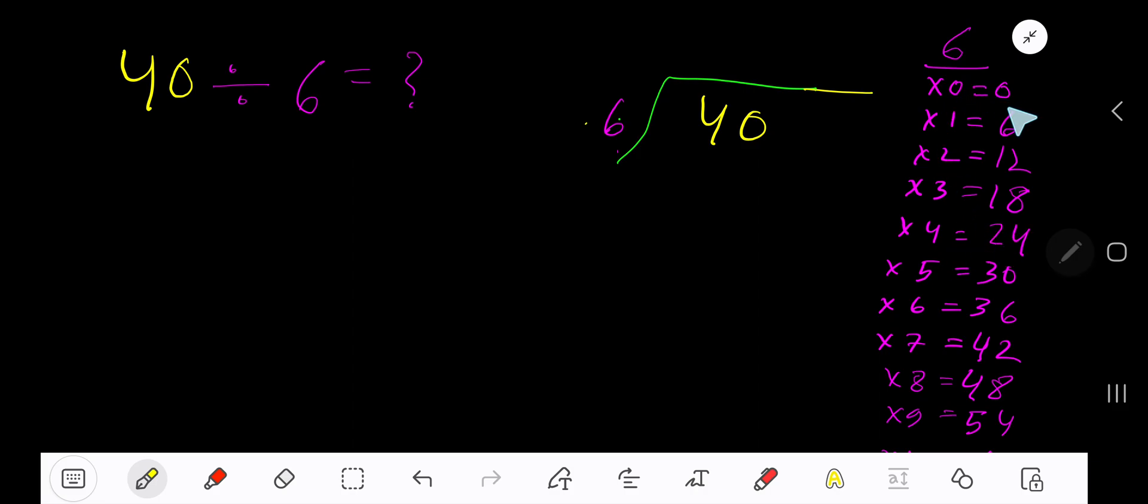To find the multiplication table of 6, just add 6 with the previous step. 0 plus 6 is 6, 6 plus 6 is 12, 12 plus 6 is 18, 18 plus 6 is 24, 24 plus 6 is 30, 30 plus 6 is 36, 36 plus 6 is 42. This process will continue.